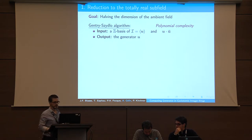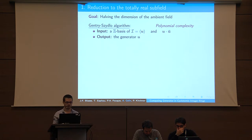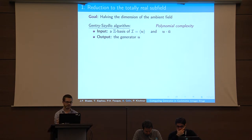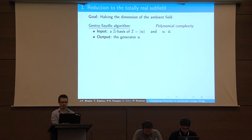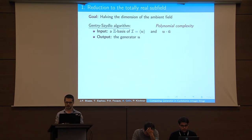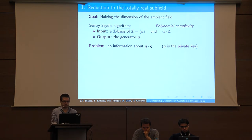The first part is the reduction to the totally real subfield. We have a cyclotomic field of dimension N and want to work in the totally real subfield of dimension N/2. This is based on the Gant-Silo algorithm with polynomial complexity. It takes as input a basis of the ideal and information on the generator — the product of the generator and its complex conjugate — and outputs the generator. The problem is that if G is the private key, we have no information about the product G times G-bar, so we cannot apply it directly.